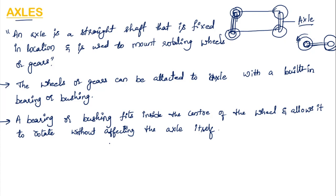The purpose of an axle is to secure the wheels or gears to a specific location relative to the other wheels or gears. The axle fixes the wheels in one particular location relative to the other wheel, and the distance between the two wheels is covered by this axle.